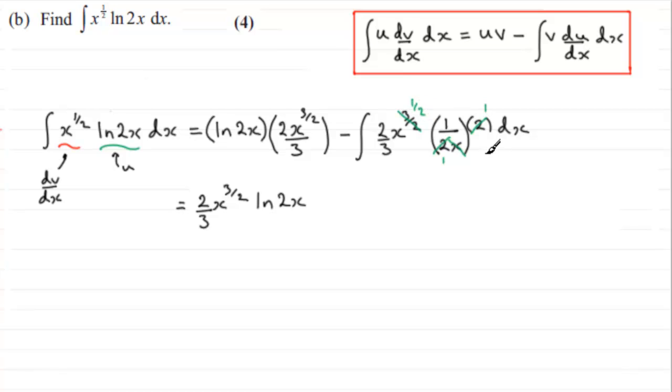I'm just going to write that back in though as minus two thirds, pull the constant out the front of the integral, and then that just leaves me with x to the power half to integrate with respect to x.